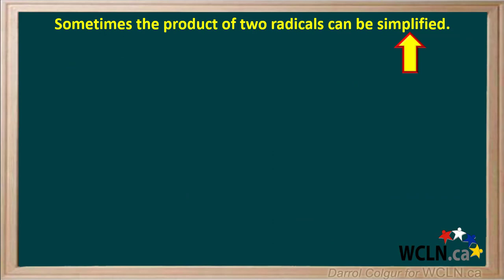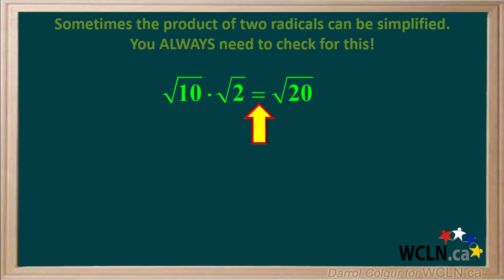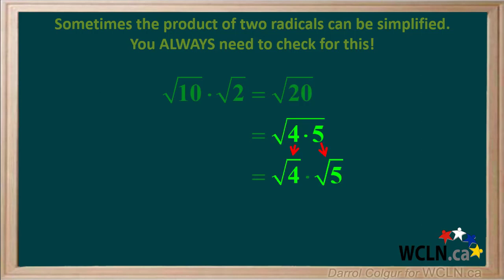Sometimes the product of two radicals can be simplified — you always need to check for this. For example, the square root of 10 times the square root of 2 equals the square root of 20. But 20 can be factored to 4 times 5. The square root of 4 times 5 can be broken up into the square root of 4 times the square root of 5. The square root of 4 is just 2, so the final answer is 2 root 5.